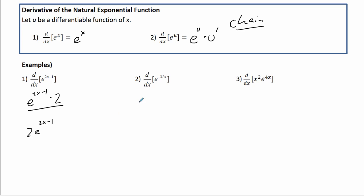The second one here, that's e to the negative 3 over x times, now this negative 3 over x is negative 3x to the negative 1, so that's positive 3x to the negative 2. So my answer is 3e to the negative 3 over x over x squared. That's just a better way to write it.